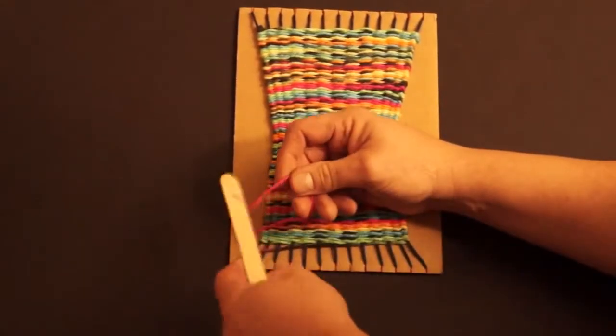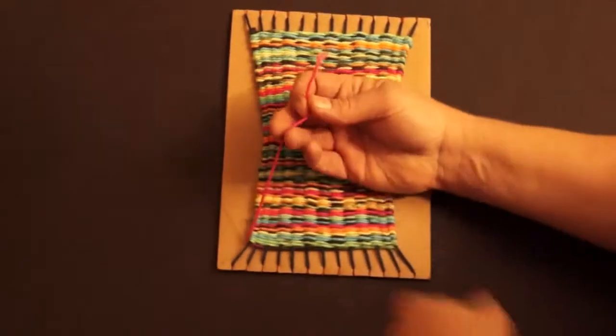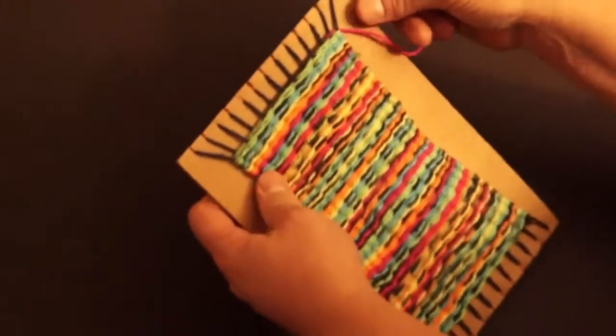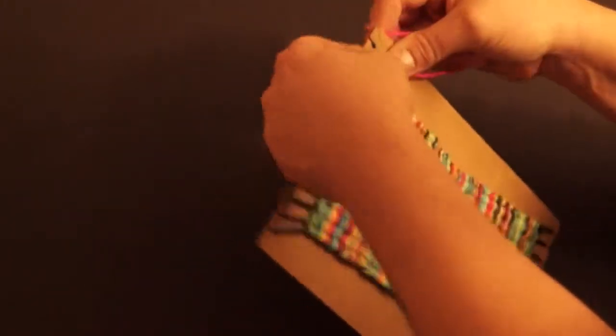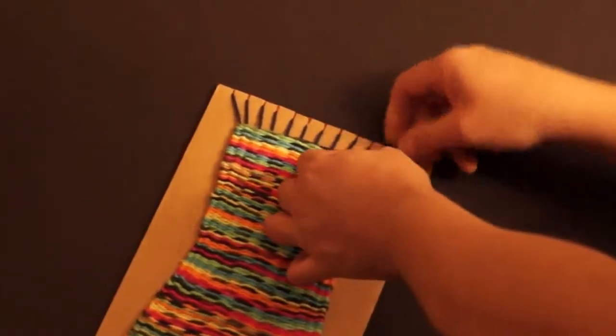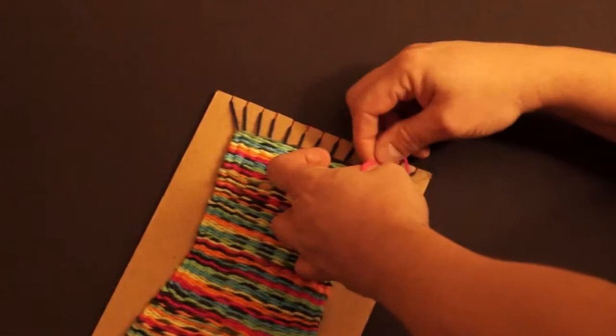I'm going to take it off of the tongue depressor that I used last time. Then I can turn the whole thing over to work on this - it might be a little easier. I'm going to wrap it around this last one and knot it. I'll slide this back just a little so I can get to it, and I'm just going to be double knotting.